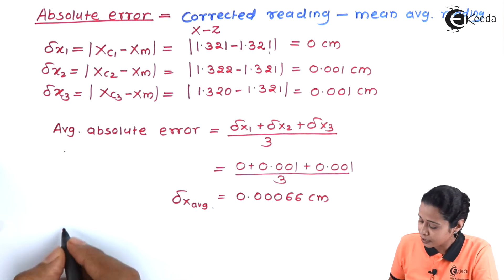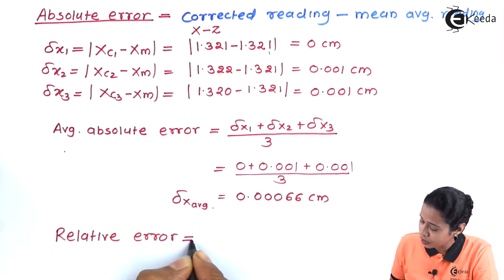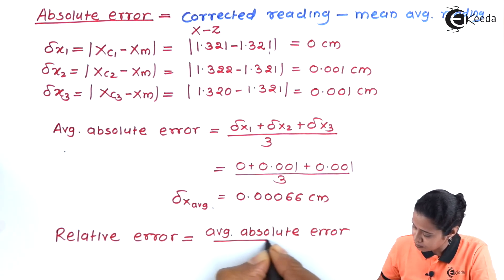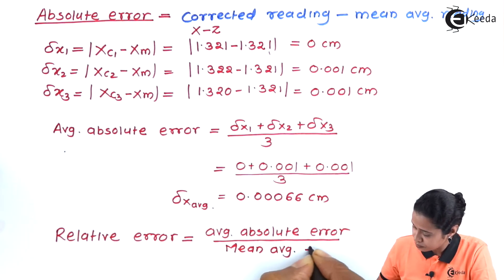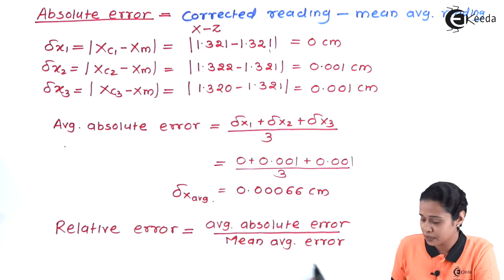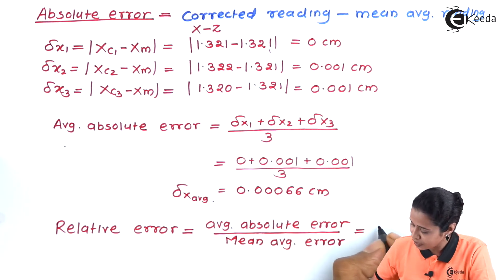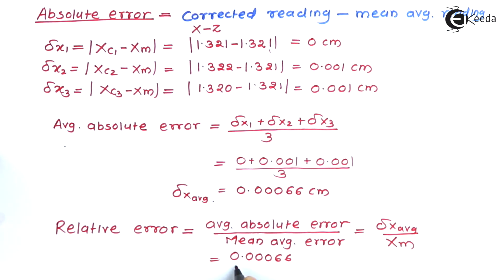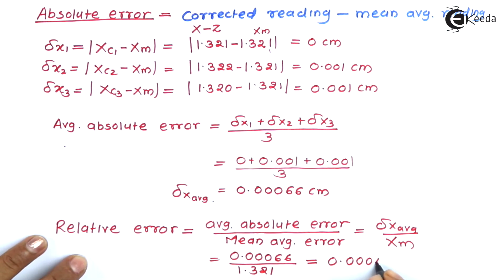The next step is to find the relative error. Relative error is the ratio of average absolute error to the mean average reading. So, relative error = delta X average divided by Xm = 0.00066 divided by 1.321, giving approximately 0.0049 cm.